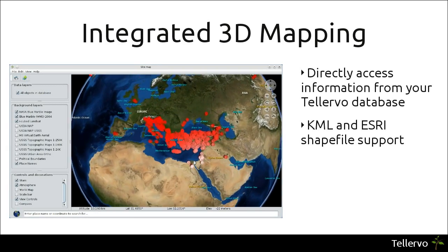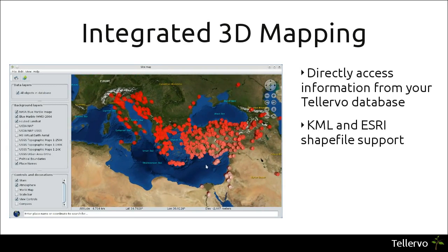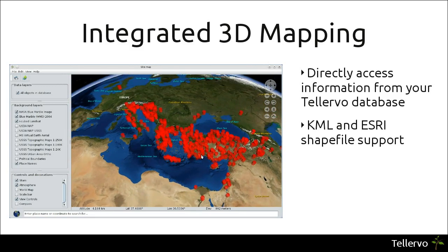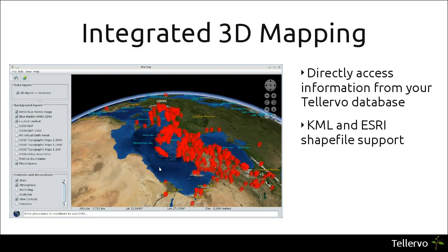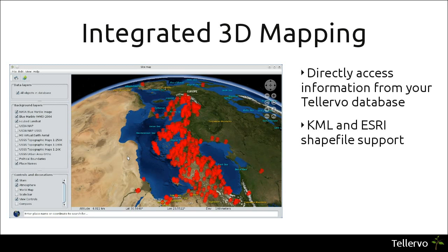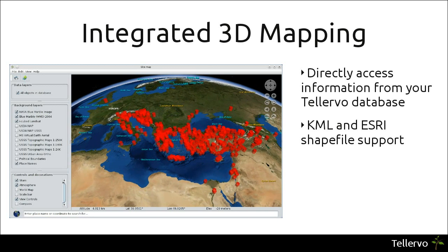Televo also includes integrated 3D mapping so that you can directly access the information within your database in a map viewer. It also supports KML and Esri shapefiles, so you can access and view your data alongside other spatial data.